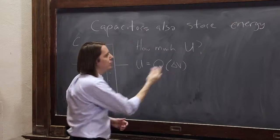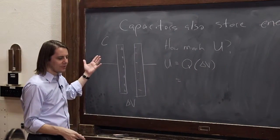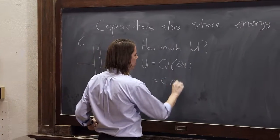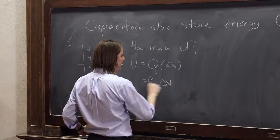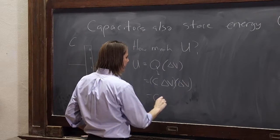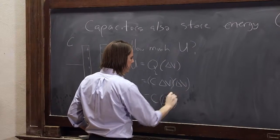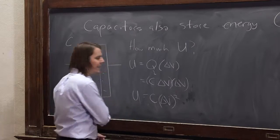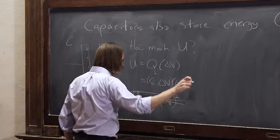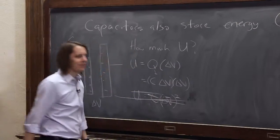So you might say U is just Q times delta V. And then say, well, Q, from what capacitance is, is C times delta V. So that is that times delta V. Just bringing that down. So you might say it's C delta V squared. And you would be wrong. It's not C delta V squared.